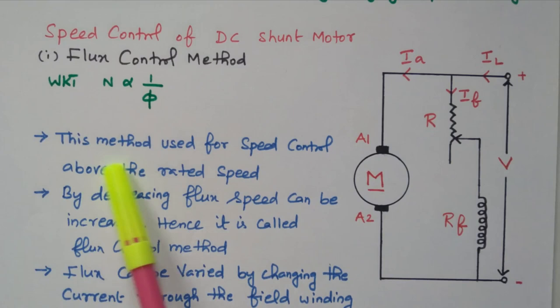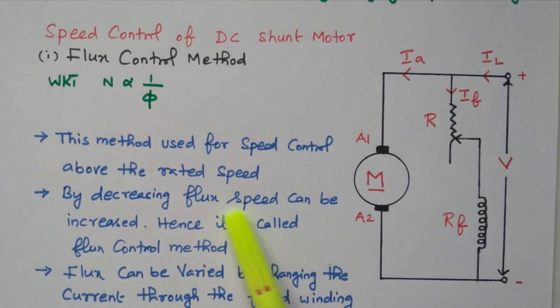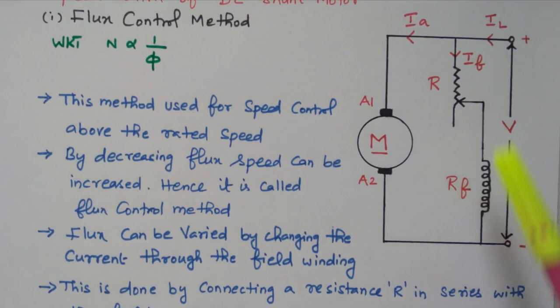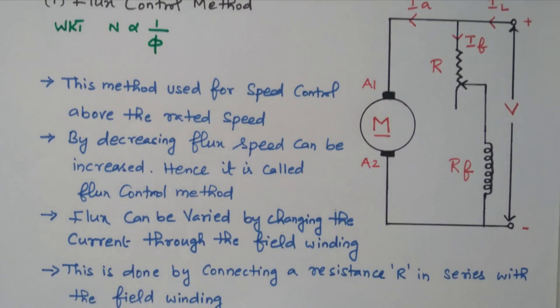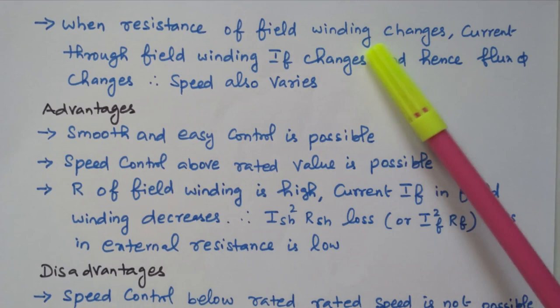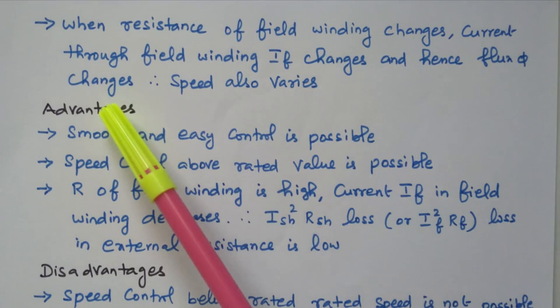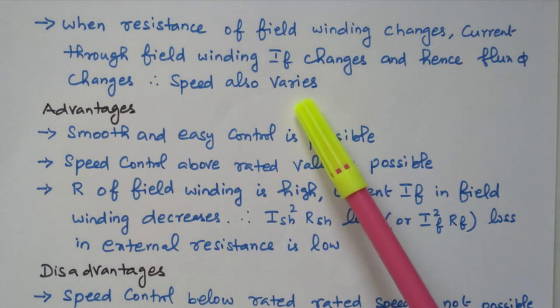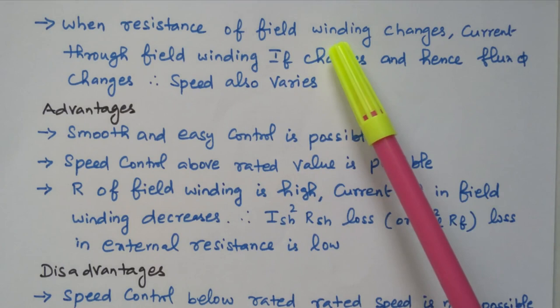This method is used for speed control above the rated speed. By decreasing the flux, speed can be increased — hence it is called the flux control method. At maximum resistance position: resistance is more, current is minimum, flux is minimum, and speed is more. Flux is varied by changing the current through the field winding, done by connecting resistor R in series with the field winding. The resistor controls the current, which controls the flux, which controls the speed of the motor.